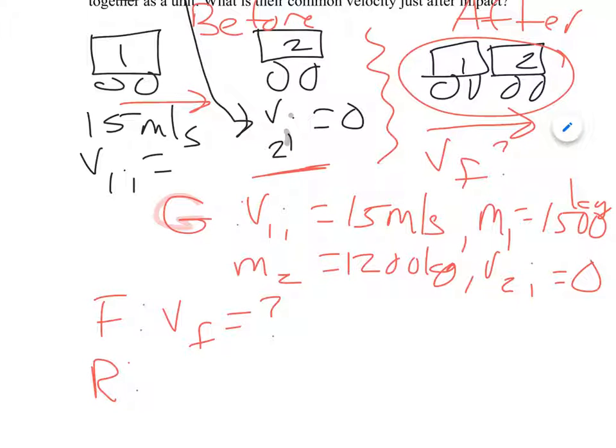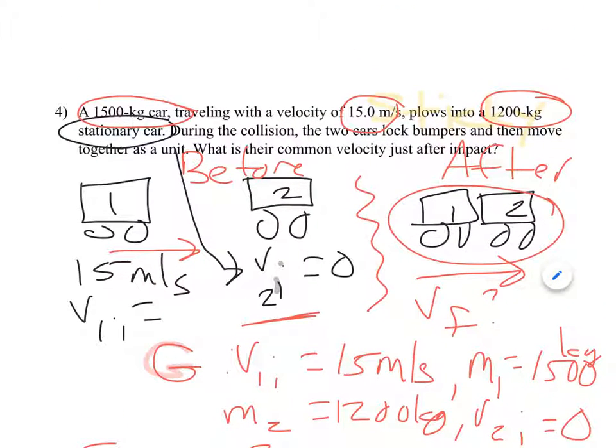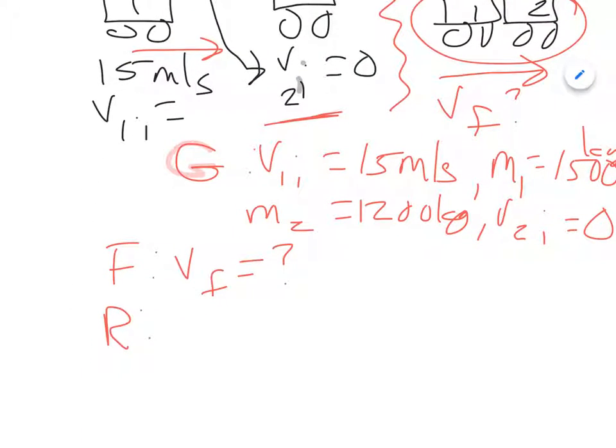And so now my equation, I go and I look and remember I said this was a sticky collision. So I find my sticky collision equation and I know that means it's M1V1I plus M2V2I is equal to M1 plus M2 times VF. So both of them stuck together.